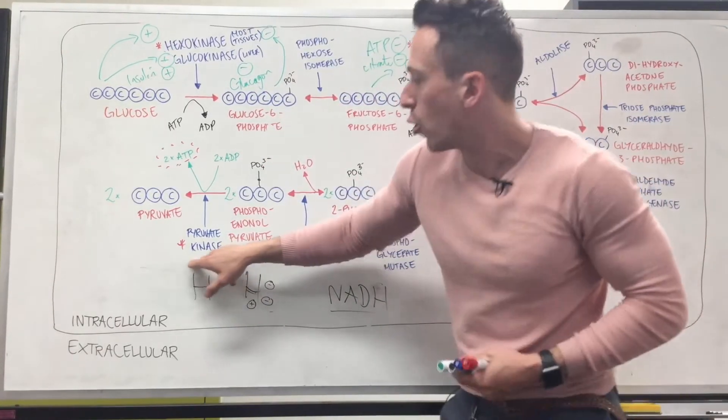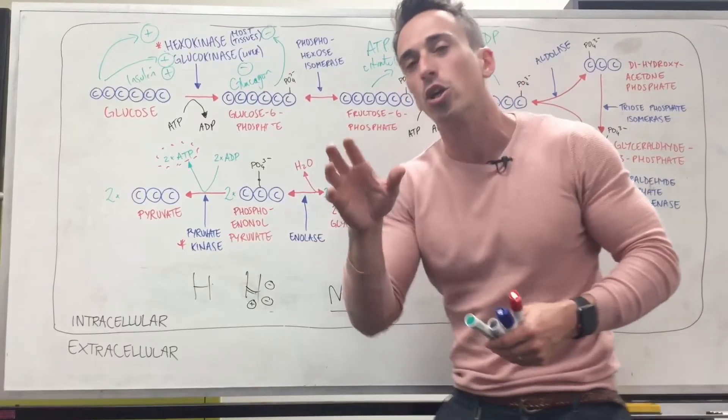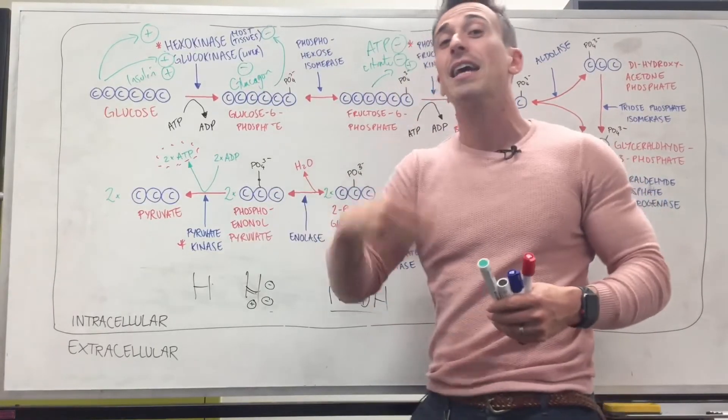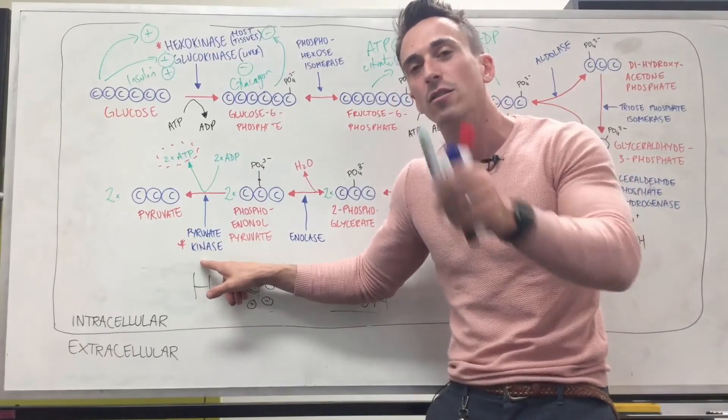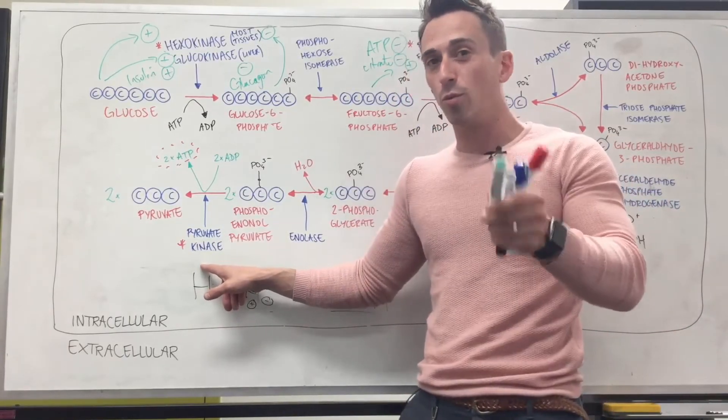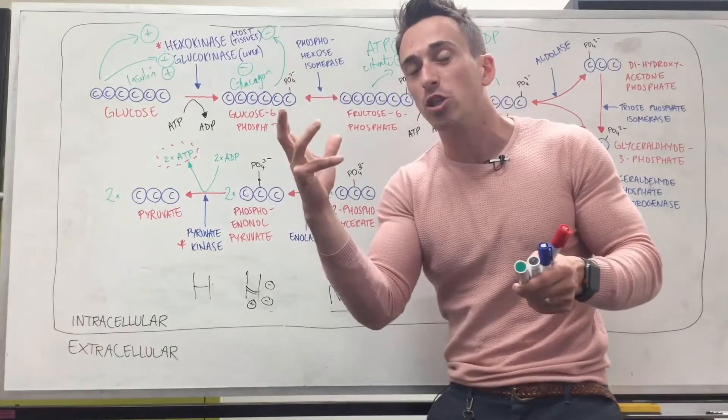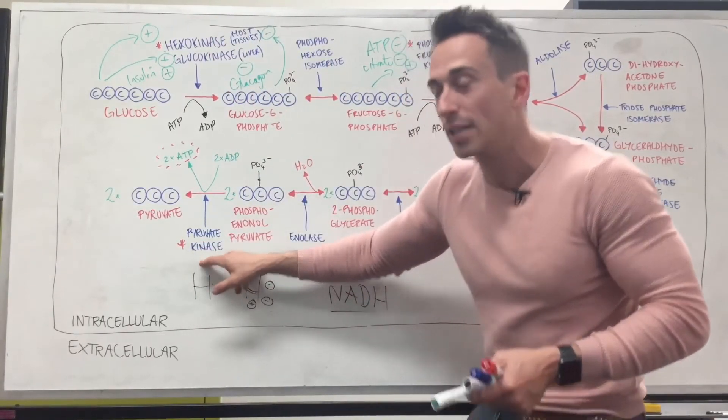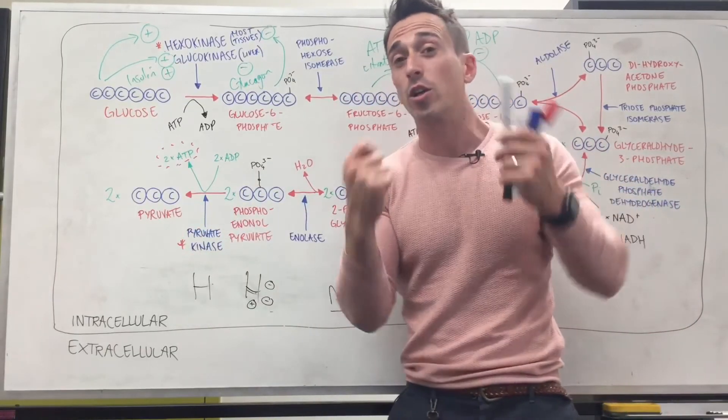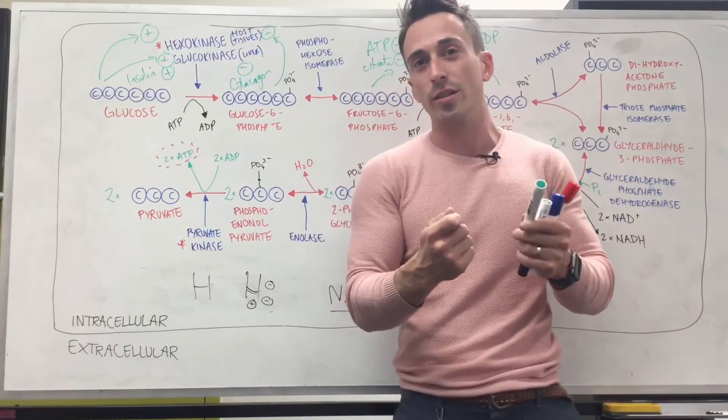Now down here, the last step, what can inhibit pyruvate kinase? Again, glucagon. What can activate it? Again, insulin. But another important thing that can inhibit this is long-chain fatty acids or acetyl-CoA. Really important, which means if you activate beta-oxidation, breaking fat down to produce energy, that inhibits pyruvate kinase and inhibits that last step. So this is a run-through of glycolysis and regulation of glycolysis.